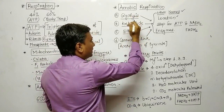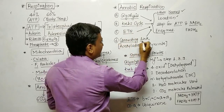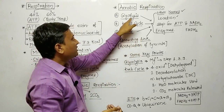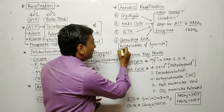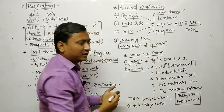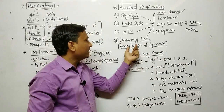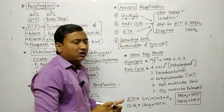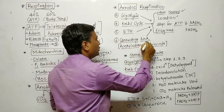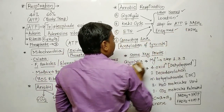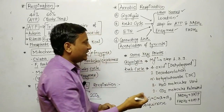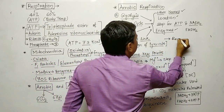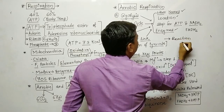Between glycolysis and the Krebs cycle there is a connecting link. It is called the connecting link because it is the reaction which links glycolysis and the Krebs cycle. It is also called acetylation of pyruvate — pyruvate is converted to acetyl coenzyme A. This reaction occurs in the mitochondrial matrix and involves decarboxylation, releasing CO2.